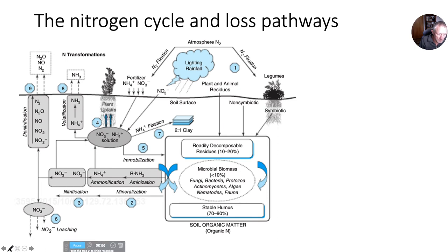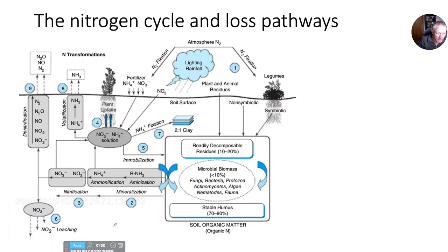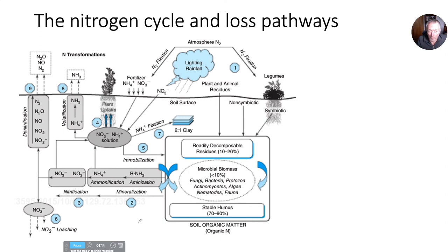When we talk about the nitrogen cycle, this is a complicated version of it, but it is a complicated nutrient cycle — probably the most complicated one of the nutrients that are essential for crop growth.